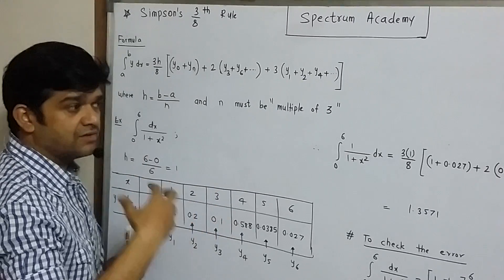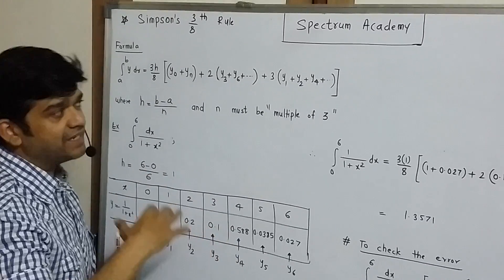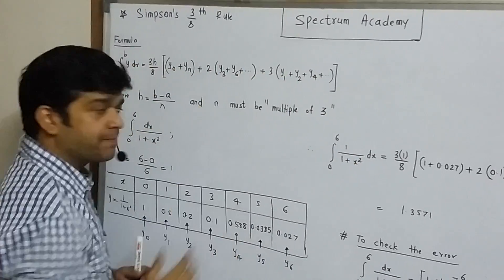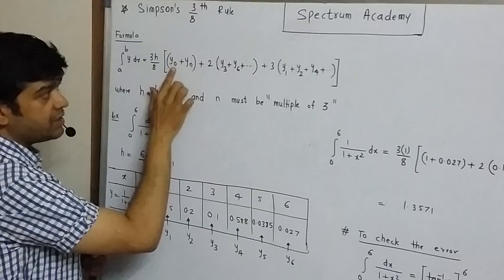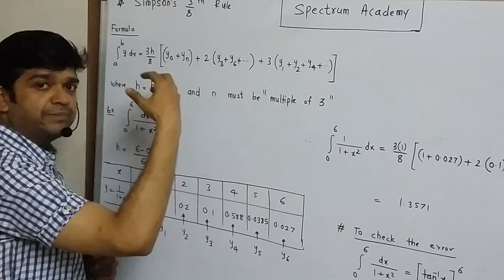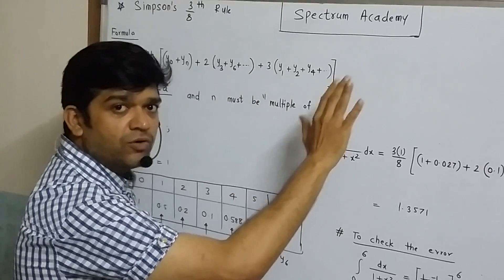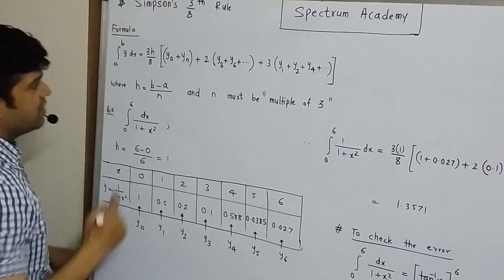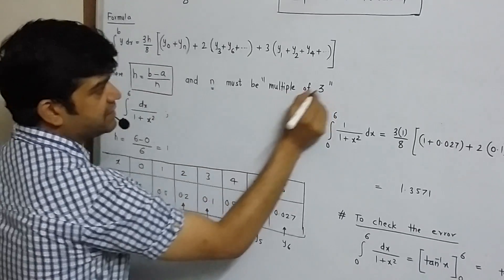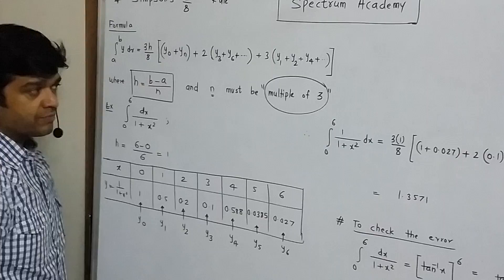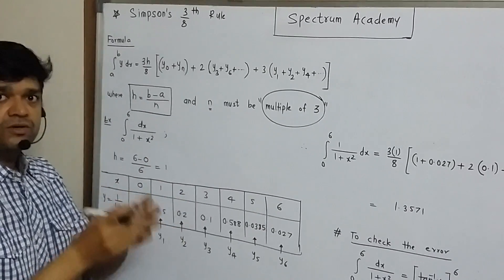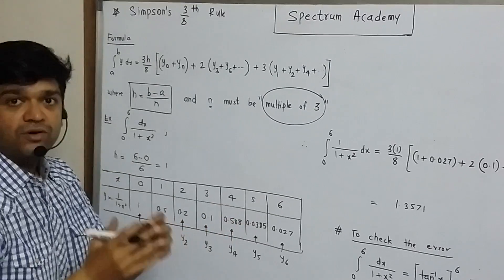y3, y6, y9, y12 and so on. Plus 3 times whatever is the remaining ordinates. So formula is 3h upon 8, sum of extreme ordinates plus 2 times ordinates which are multiple of 3 plus 3 times remaining all ordinates. Where this h is b minus a upon n, here n must be multiple of 3.